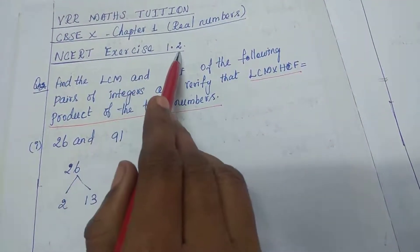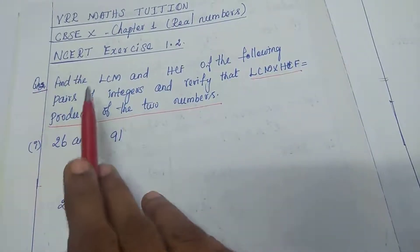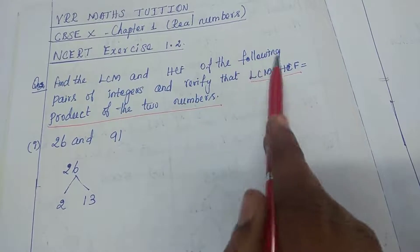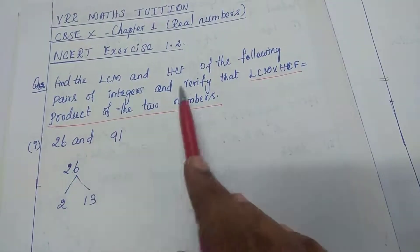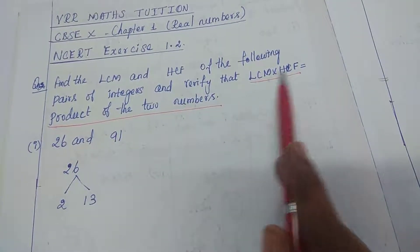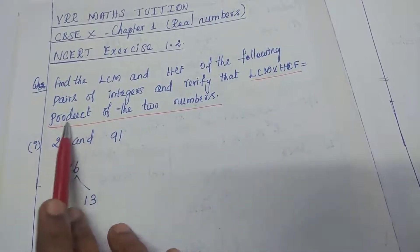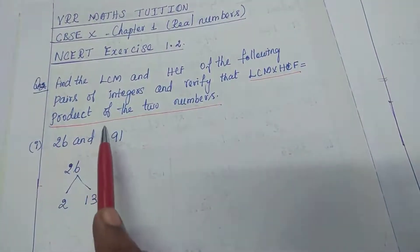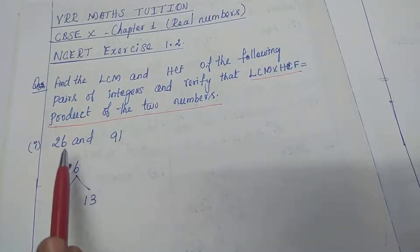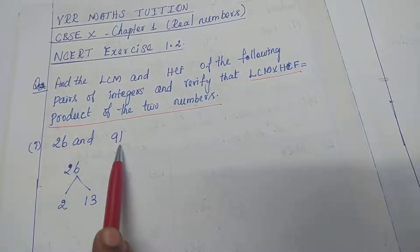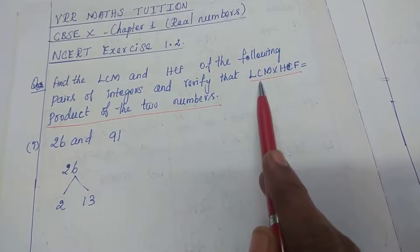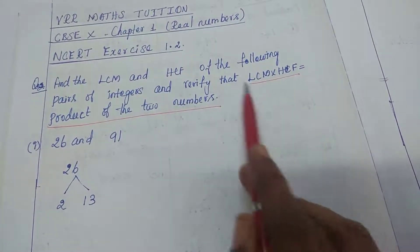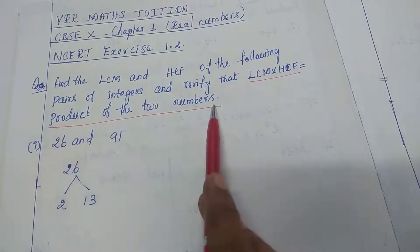NCERT Exercise 1.2, Question 2: Find the LCM and HCF of the following pairs of integers and verify that LCM into HCF equals the product of the two numbers. In question number 2 there are three divisions. The first division involves 26 and 91. We are going to verify the result LCM into HCF equal to product of the two numbers.